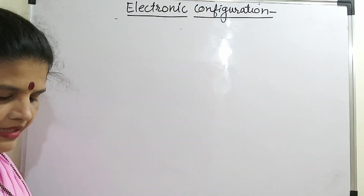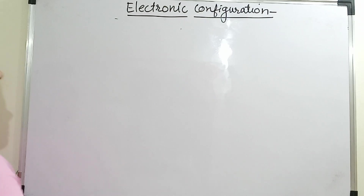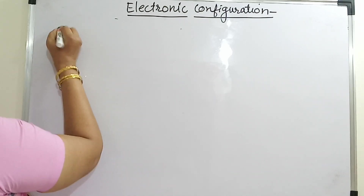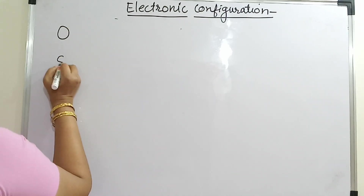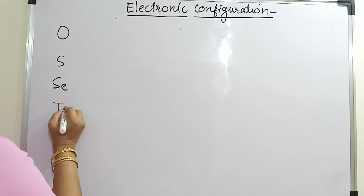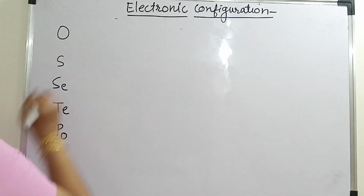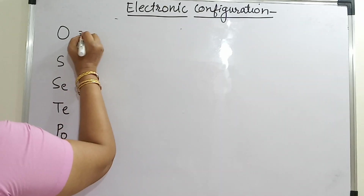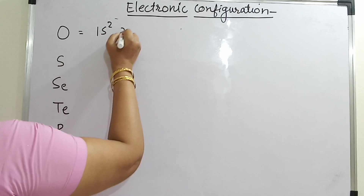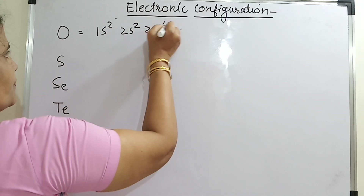The elements in group 16 are oxygen, sulphur, selenium, tellurium and polonium. For oxygen it is 1s2, 2s2, 2p4.